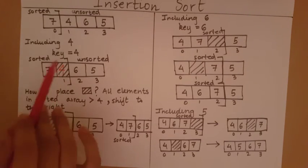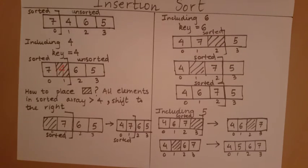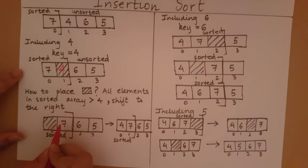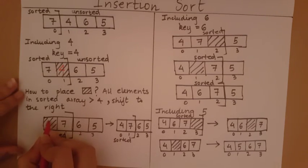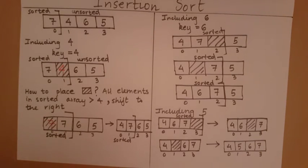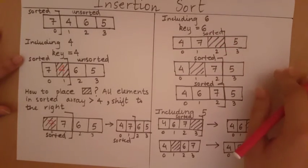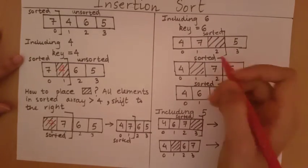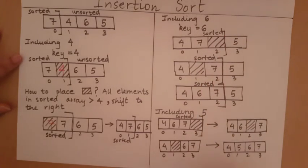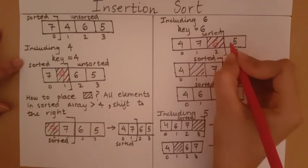Since we've stored four in a variable, we don't need to keep track of it in the array, and we can compromise the space four was occupying. Similarly, when seven moves to the next index, the array already has a record of seven there, so the previous position can be treated as a space — we can replace whatever was at that index with any value we want.